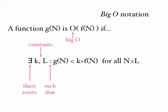So in other words, g of N takes less time than k times the running time of the function of N.